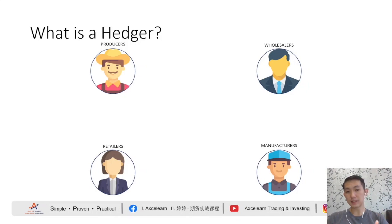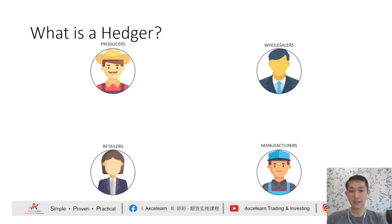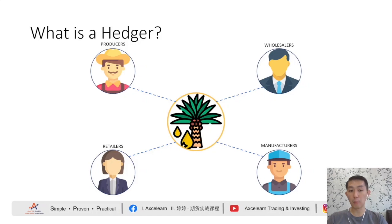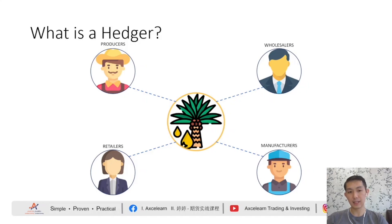So, in Bursa Derivatives Malaysia, we have one popular agriculture commodity futures product that is widely traded, and that is the crude palm oil futures, so-called the FCPO. In Malaysia, those hedgers who are actually in the palm oil business can take advantage of using these futures products to hedge their risk using the crude palm oil futures.